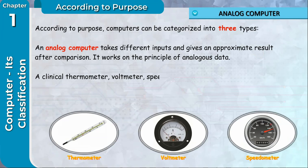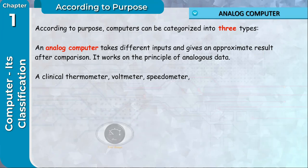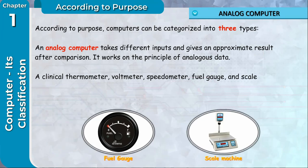A clinical thermometer, voltmeter, speedometer, fuel gauge and scale machine are some of the examples of analog computers.